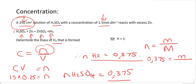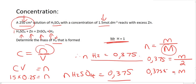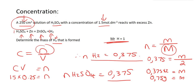Then we convert to mass using n equals m over capital M. The moles are 0.375, the mass is unknown, and the molar mass of H2 is 2 because there are two hydrogens each with a mass of 1. So the mass equals 0.375 times 2, giving us 0.75 grams of hydrogen. In this lesson we looked at all the different ways stoichiometry questions can be asked. In the next lesson we'll practice more, and then we'll make it more complicated with some interesting new scenarios.